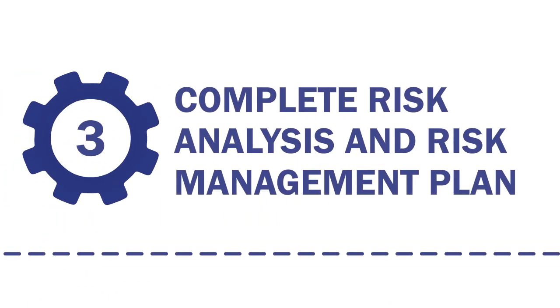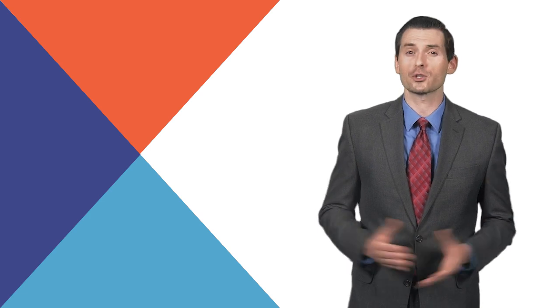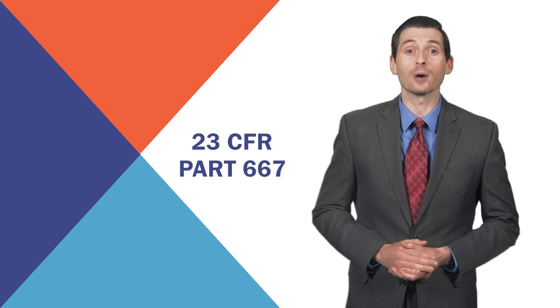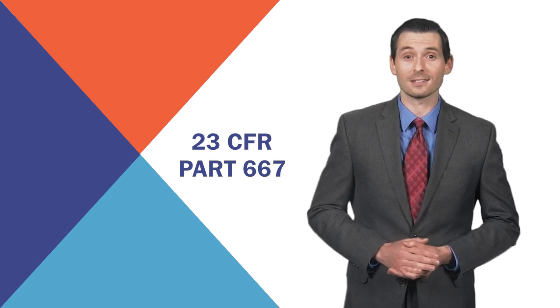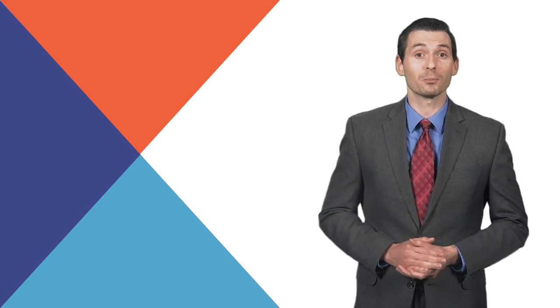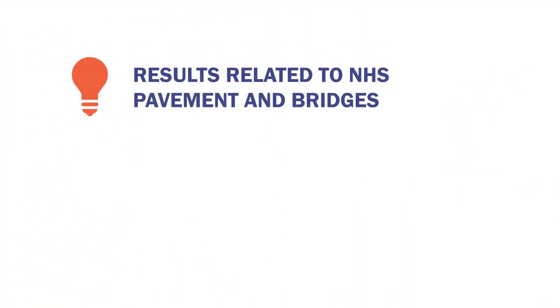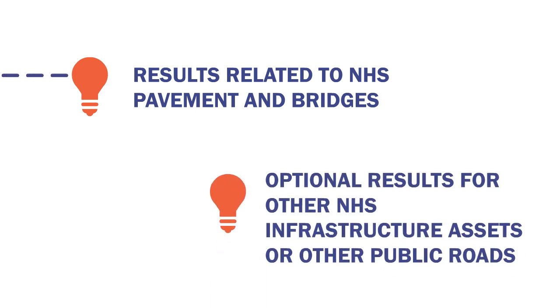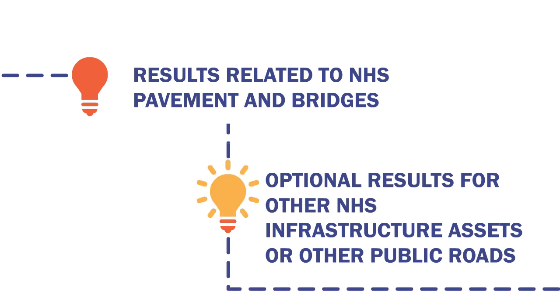3. Complete a risk analysis and develop a risk management plan for NHS condition and performance. These risks include those associated with current and future environmental conditions, such as extreme weather events, climate change, seismic activity, and risks related to recurring damage from emergency events, as identified by the evaluation carried out under 23 CFR Part 667. The process must produce a summary that discusses, at a minimum, the results related to the state's NHS existing pavements and bridges. If the state elects, it can include optional results for other NHS infrastructure assets or other public roads assets in the transportation asset management.